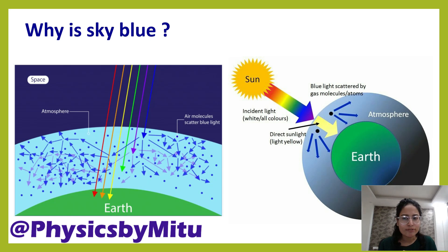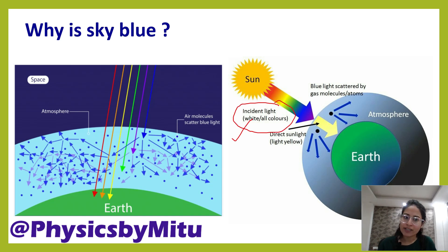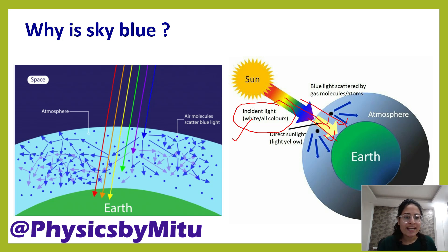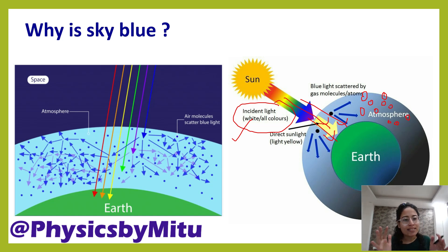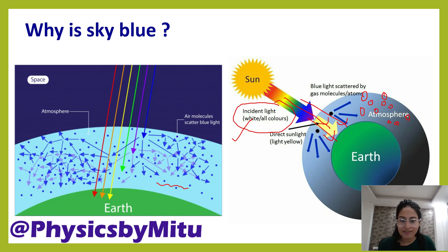Now let us come to the question: why is the sky blue? When sunlight falls on the earth, it has seven colors in it and passes through layers of gases — the atmosphere. There are many air molecules present in the atmosphere, and these air molecules have a small size. So they scatter all shorter wavelengths — violet and blue — these shorter wavelengths get scattered.